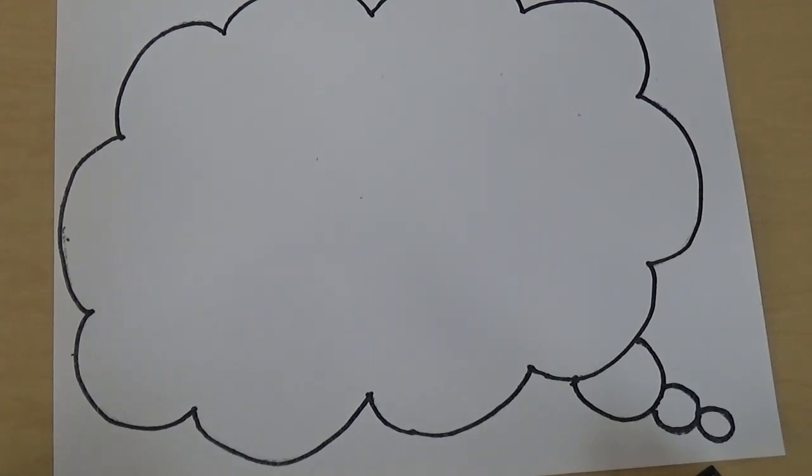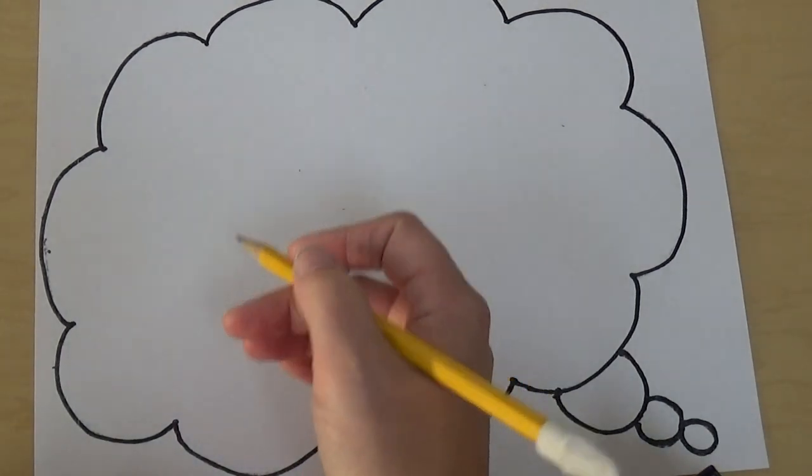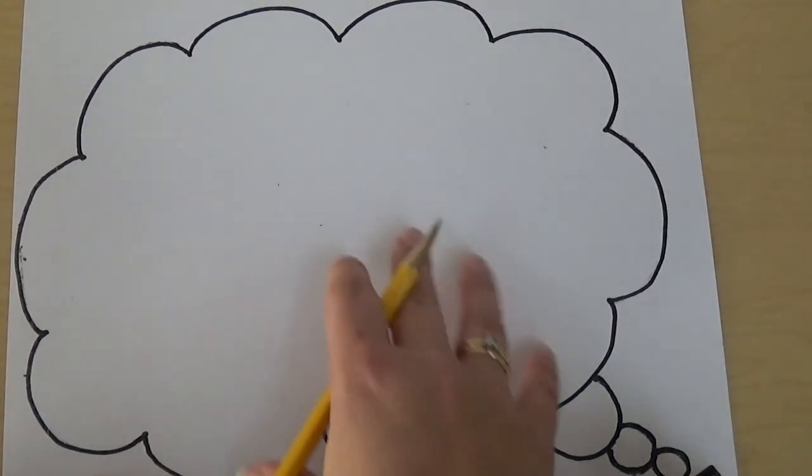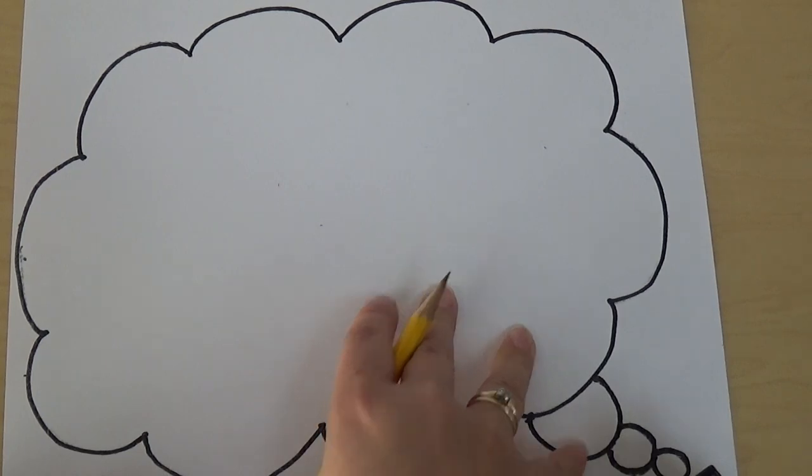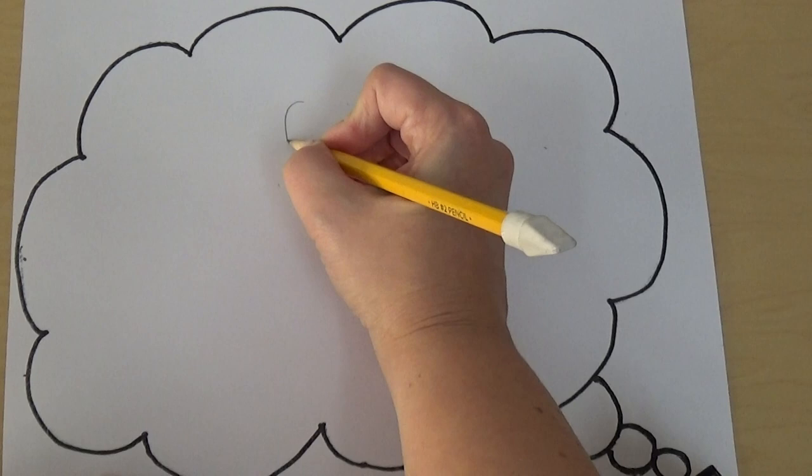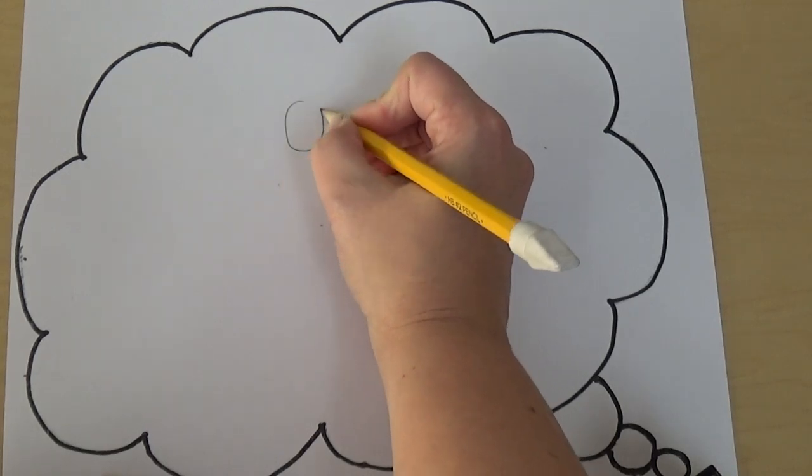So when you are drawing your picture you need to make sure you include yourself. When you are drawing yourself you need to make sure you have all of the parts of your body. So I am going to do just a quick example to show you. So you need to draw your head. Remember we talked about heads are kind of an oval shape.